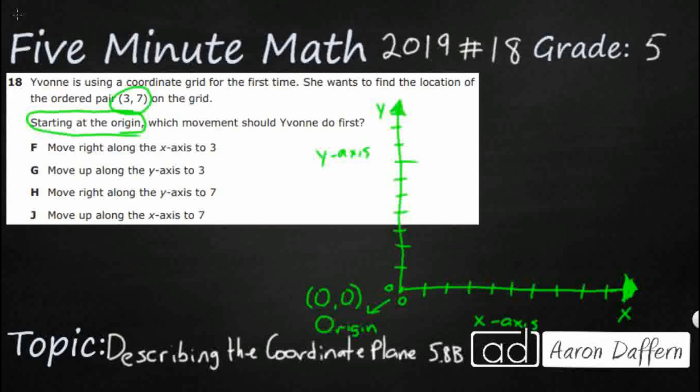So in this particular coordinate grid in fifth grade we only deal with positive numbers. When you get to sixth grade and above you actually look at all four quadrants because sometimes the x and y values can be negative. So what we're dealing with right here in fifth grade is quadrant one. Positive x and positive y.